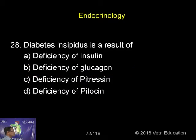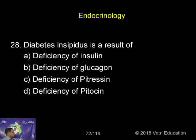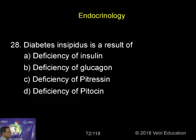Diabetes insipidus is a result of decreased secretion of what is called Pitrecin, otherwise called vasopressin, otherwise called ADH. The vasopressin, otherwise called Pitrecin, is normally secreted and released from the posterior pituitary gland.